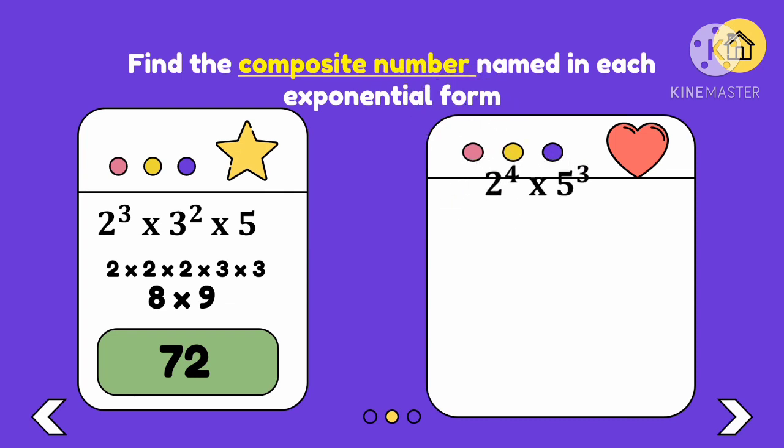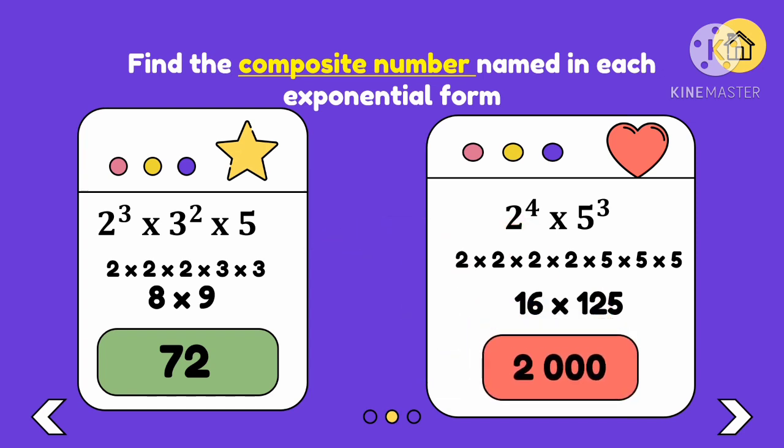Another example: 2 raised to the 4th power times 5 cubed. How many times will we write 2? 4 times. How many times will we write 5? 3 times. Then multiply the expanded factors. 2 times 2 times 2 times 2 is 16, and 5 times 5 times 5 is 125. Multiply the 2 numbers: 125 times 16 is 2,000, the composite number for 2 to the 4th times 5 to the 3rd power.